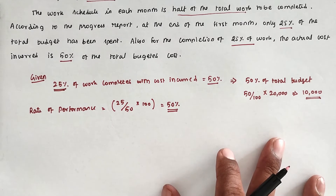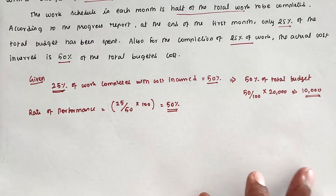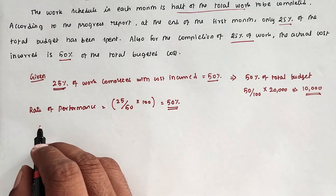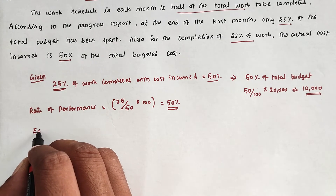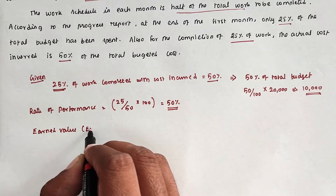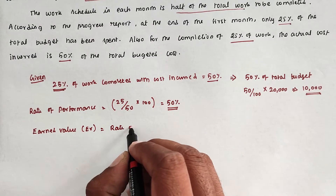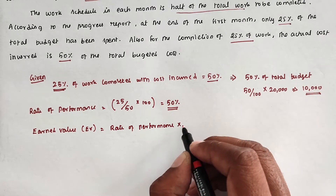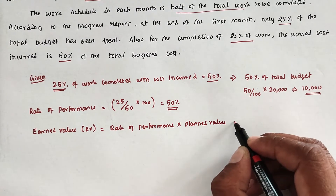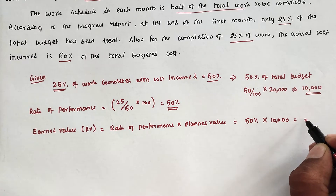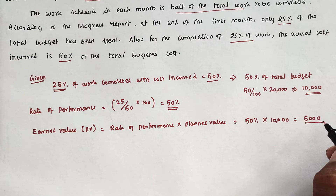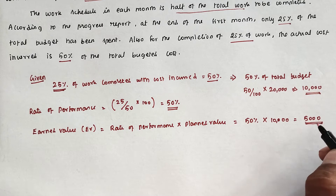So only half of the work is completed now, and 75% of work remains to be completed in the next month. Next, we calculate the Earned Value (EV). EV = Rate of Performance × Planned Value = 50% × 10,000 = 5,000. This indicates the total actual cost incurred is 10,000, but according to the plan only 5,000 should have been spent.